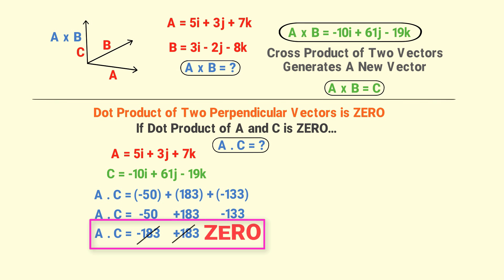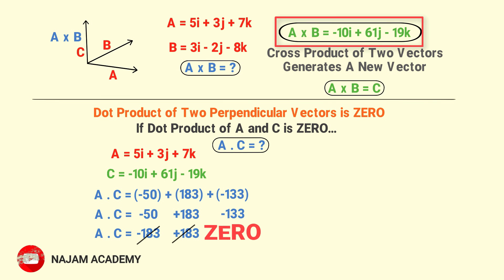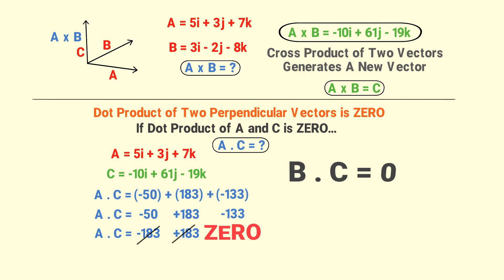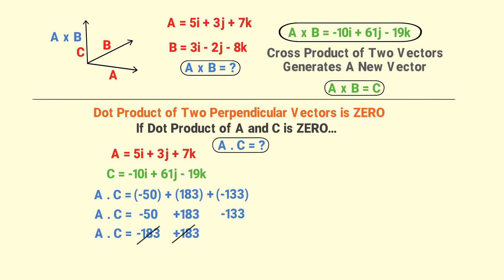The dot product of vector A and vector C equals zero, confirming that vector A is perpendicular to vector C. Therefore, our calculation of A cross B is 100% correct. Even if you find the dot product of B and C, you will get zero, because if C is perpendicular to A, it must also be perpendicular to B. This concludes how to find the cross product of two vectors and how to check your answer.